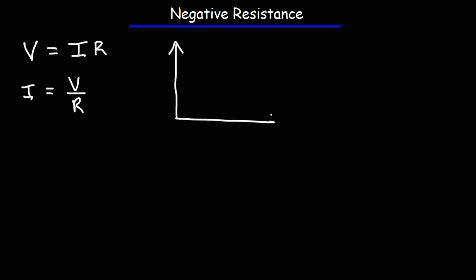Now if we were to plot that equation, putting voltage on the x-axis and current on the y-axis, and if we were to keep the resistance constant, we would get a graph that looks like a straight line. This region represents positive resistance — that's basically normal resistance that you would get in a typical resistor. As you increase the voltage, the current increases.